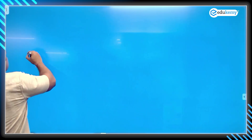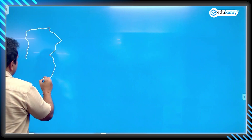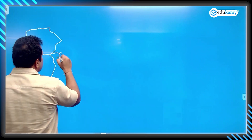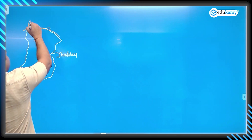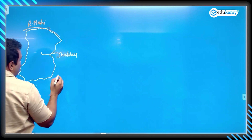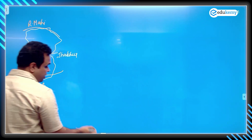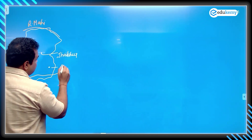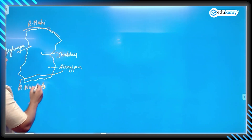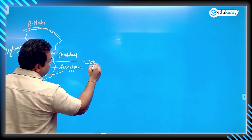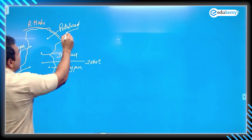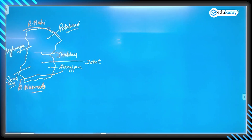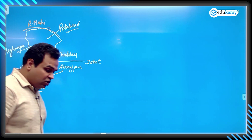Now I am drawing a map of District Jhabua. On the northern side there is river Mahi. It is a drainage basin between river Mahi in the north and river Narmada in the south. Key places here are Ali Rajpur, Meg Nagar, Jobat, Sendwa, and Petlawad. This place is the drainage basin of both rivers.